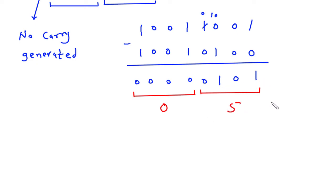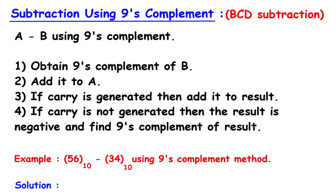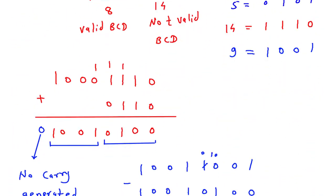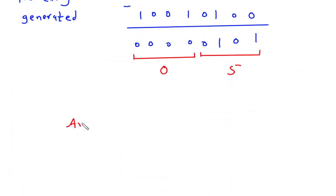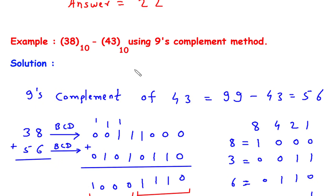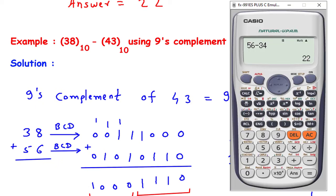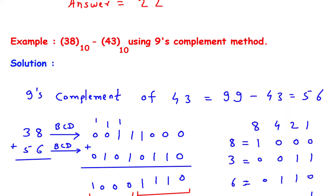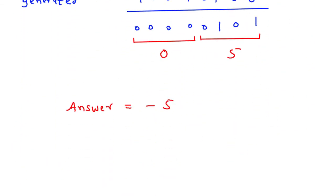So the final answer is 5, but it is negative. Since no carry was generated, the result is negative and the 9's complement gives us the magnitude. Our answer is minus 5. We can verify in a calculator: 38 minus 43 equals minus 5. Hence our answer is correct.